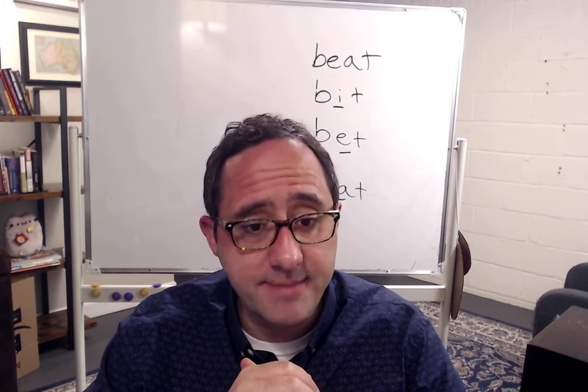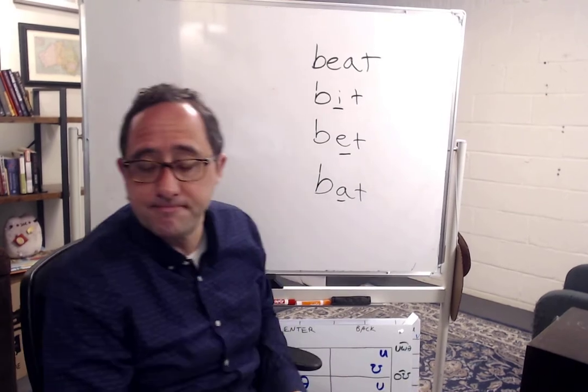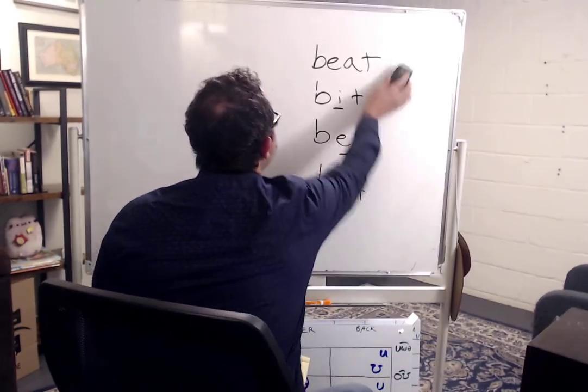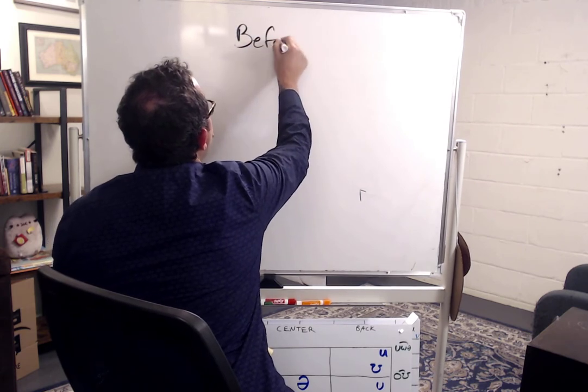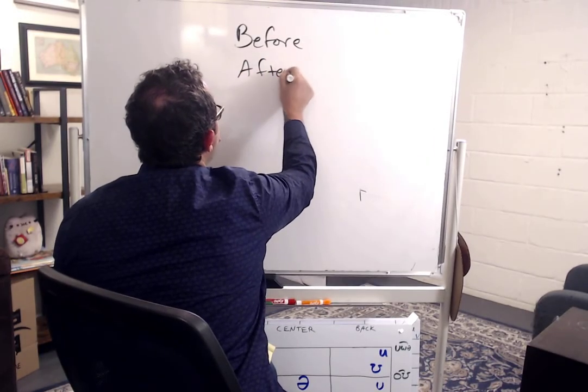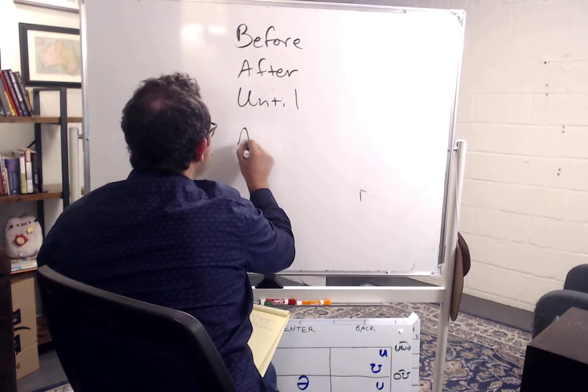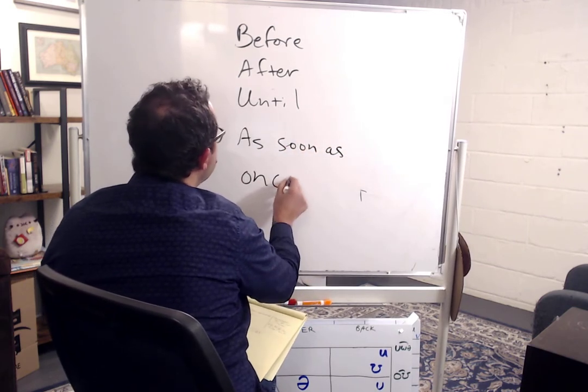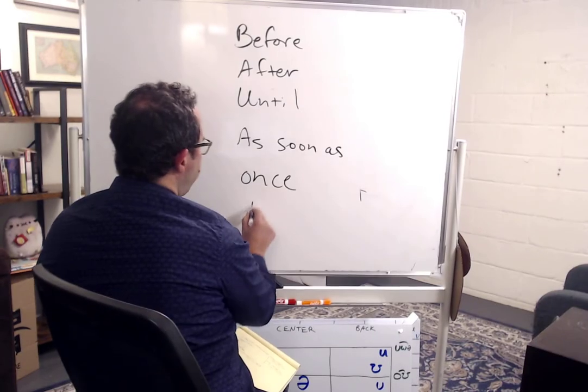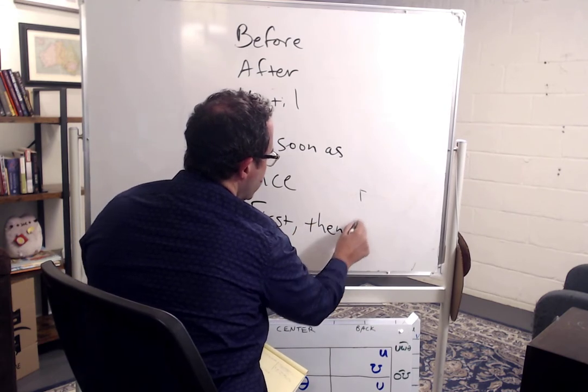So I want to talk about time conjunctions. So how do we talk about time? And I'll explain myself. So let's look at before, after, until, as soon as, and once. We can also add first, then, last.